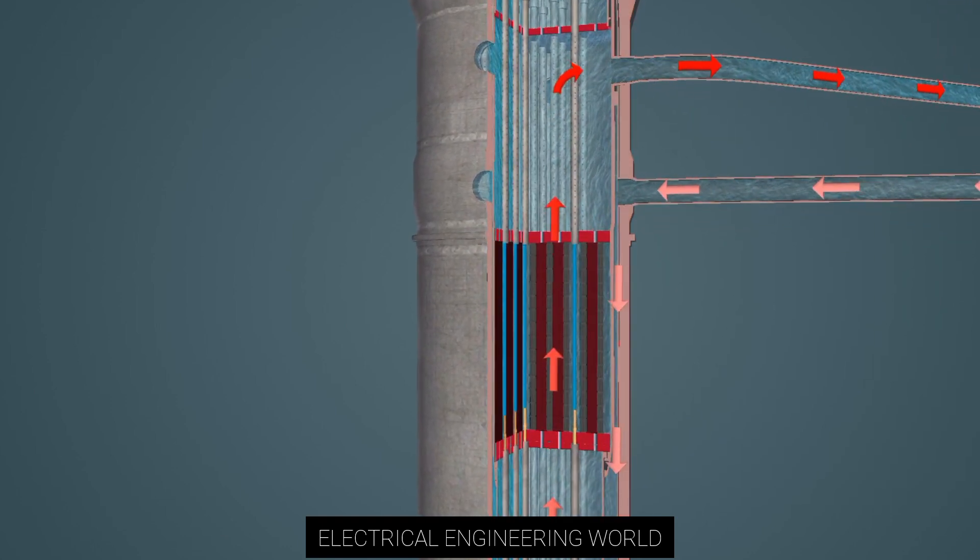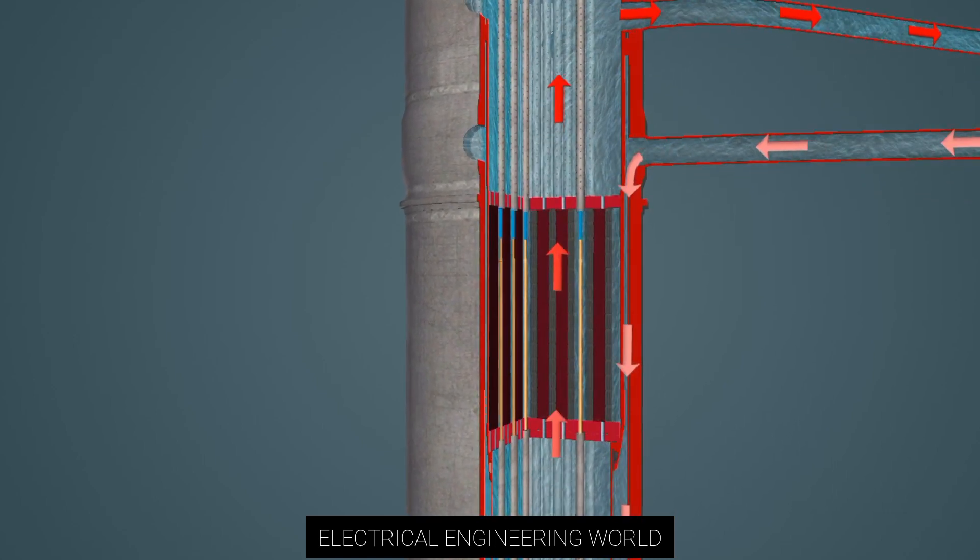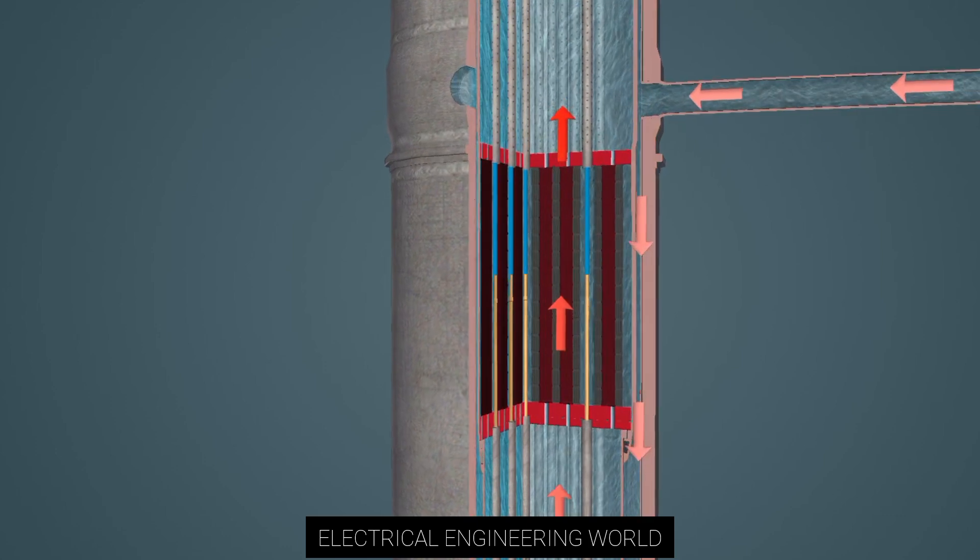In the event of a malfunction, modern reactors use negative feedback mechanisms to automatically shut themselves down.